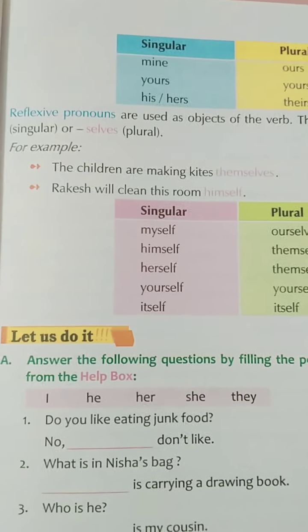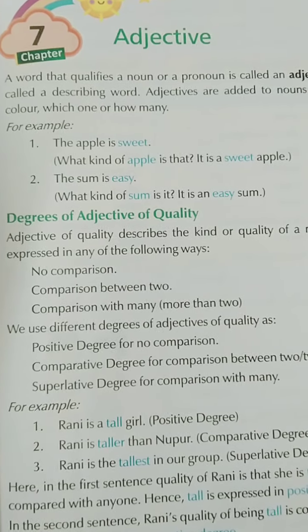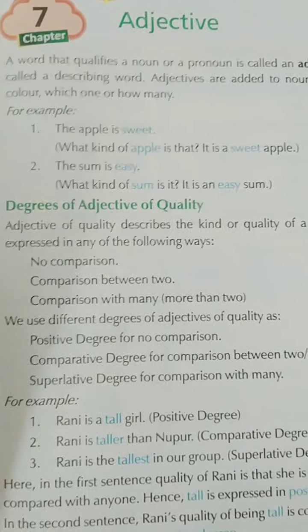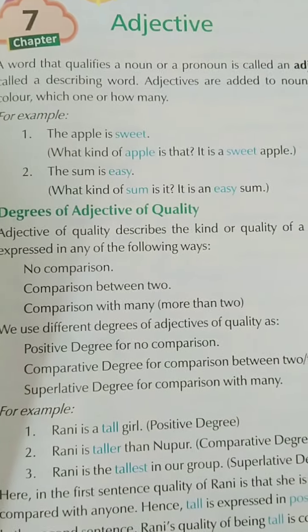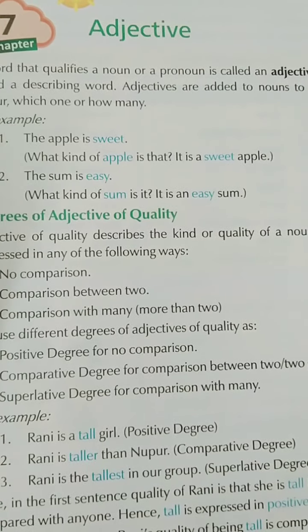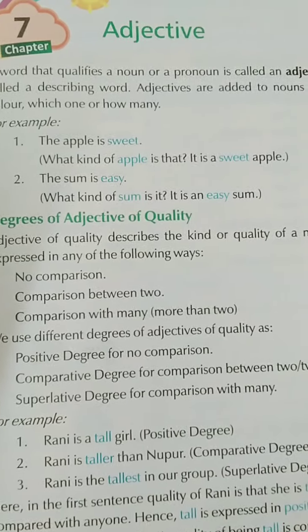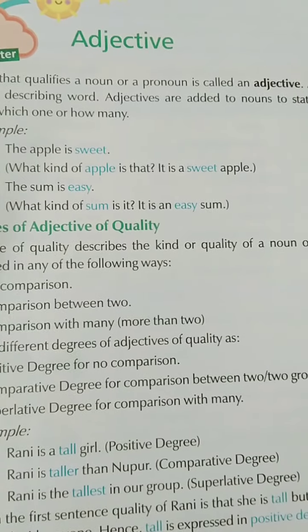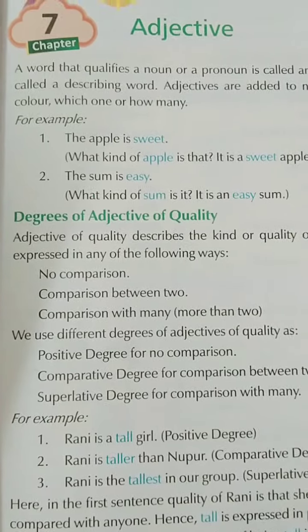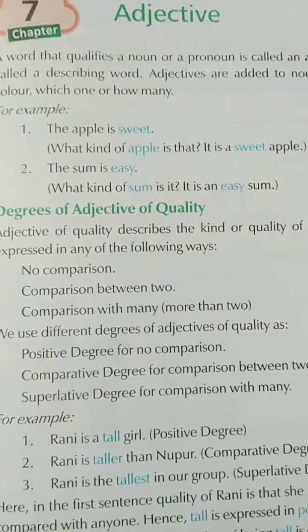I am continuing with chapter seven also in this video. Please open chapter seven from your book. Chapter seven is on adjectives. A word that qualifies a noun or pronoun is called an adjective. An adjective is also called a describing word. Adjectives are added to nouns to state what kind, what color, which one, or how many.